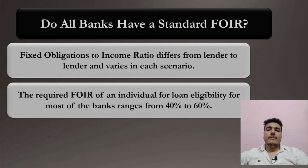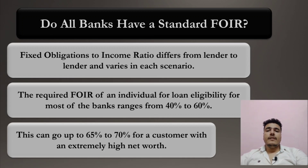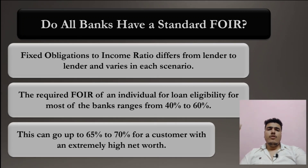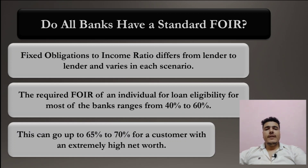However, some individuals can still get a loan even with a high FOIR if their net worth is extremely high. Even if the monthly salary isn't sufficient, a good net worth can help secure a loan. To improve your FOIR, a good method is to take a joint loan, so that the EMI is divided between applicants, your disposable income increases, and your FOIR decreases.